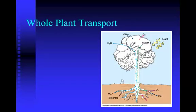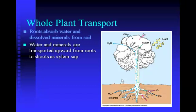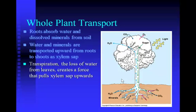Let's take a look at this diagram and talk about whole plant transport. The roots absorb water and minerals from the soil. Those water and minerals are sucked up the xylem of the plant upwards as xylem sap. And then transpiration — the loss of water through the stomata, the leaves of the plant — actually draws the water and minerals up through the plant. It's kind of similar to sucking water up a straw.